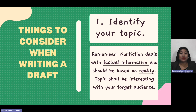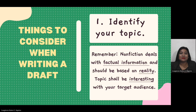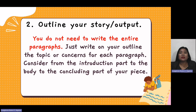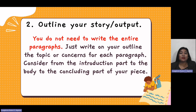There are things to consider when writing a draft. The first one is to identify your topic. Remember, non-fiction deals with factual information, so you should be based on reality. Topics here should be interesting to your target audience. Secondly, outline your story or your output. You do not need to write entire paragraphs — just write on your outline the topics or concerns for each paragraph. Consider from the introduction part, through the body, to the concluding part of your piece.